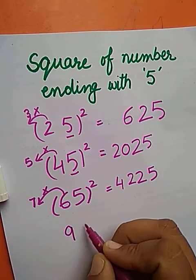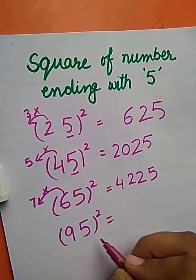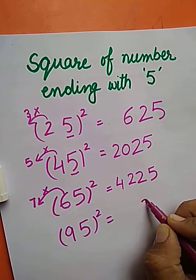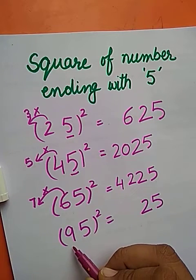Let us now find the square of number 95. The last digit here is 5. 5 times 5 is 25. The number next to 9 is 10.